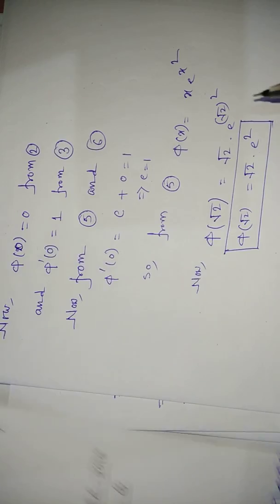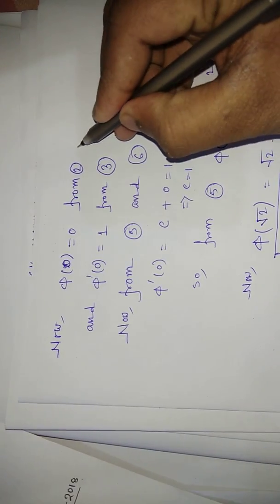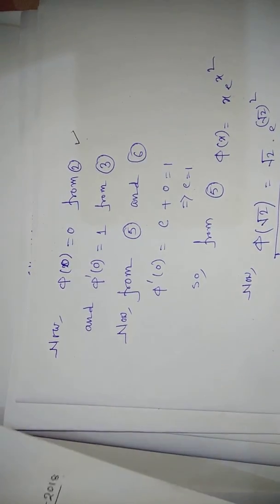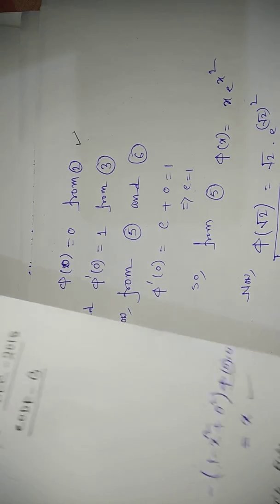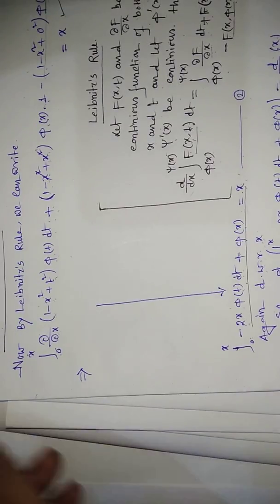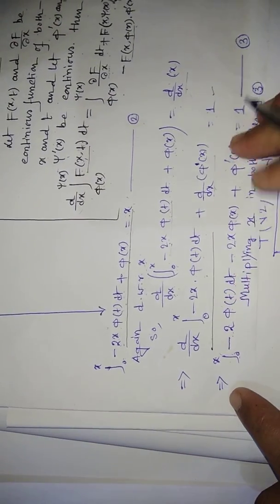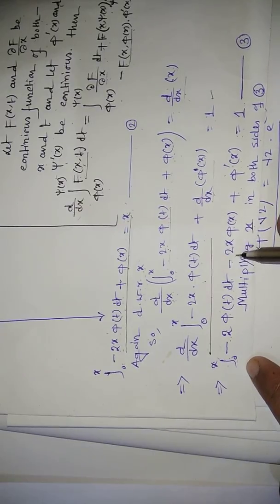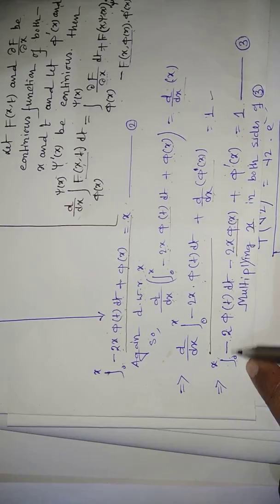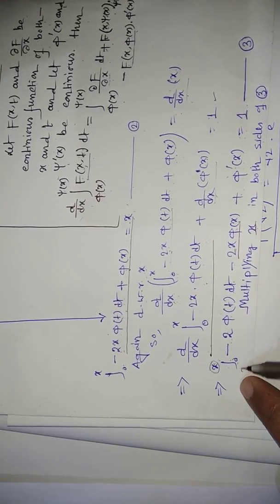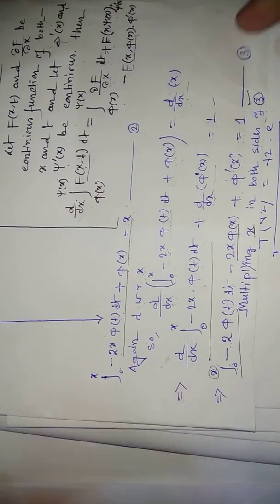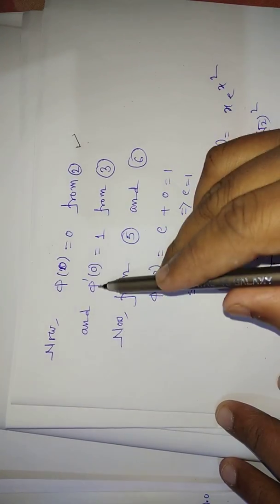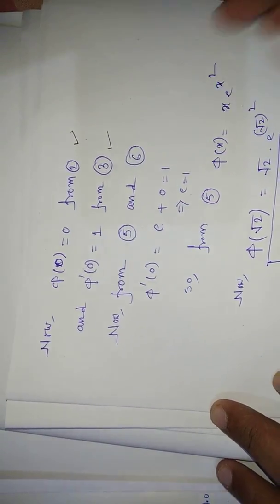From equations (2) and (3), applying initial conditions: putting x = 0 in equation (2) gives φ(0) = 0. Putting x = 0 in equation (3), terms vanish and we get φ'(0) = 1.